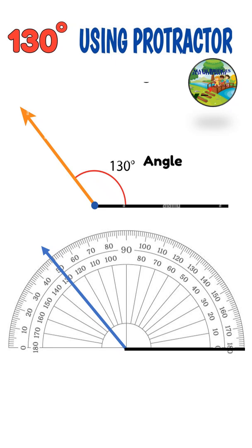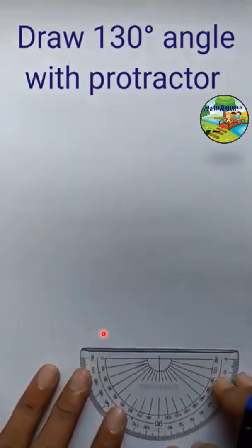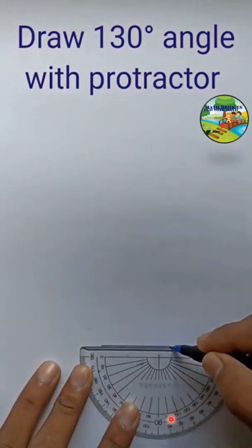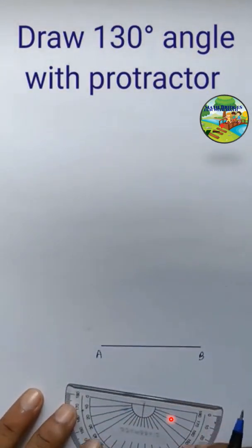Get ready with your protractor, a pencil and a ruler. Now, take your ruler and draw a line AB and label it as AB. At point A, we are going to measure the angle we are going to construct.